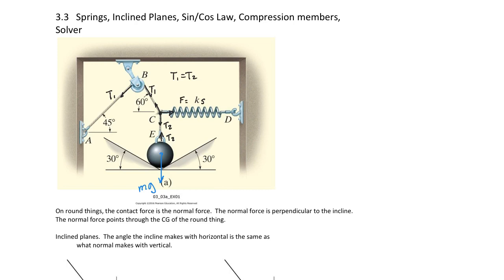We have contact surfaces. Any time you have an inclined plane, there will be a contact force called the normal force. There will be a normal force on each side — N1 and N2. In this scenario they are the same because the angles are the same. If the angles were different, those normal forces would be different.